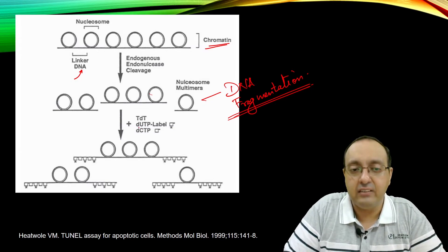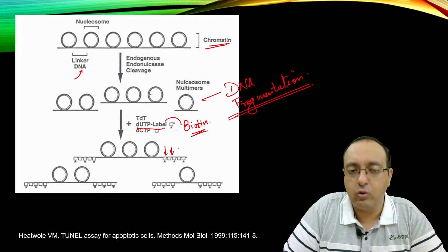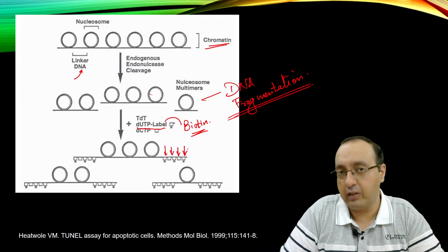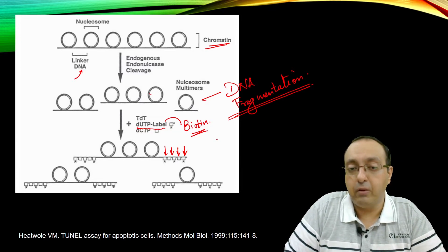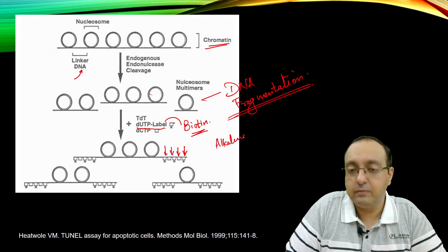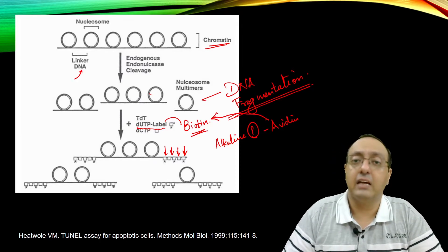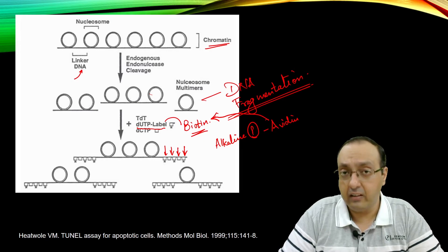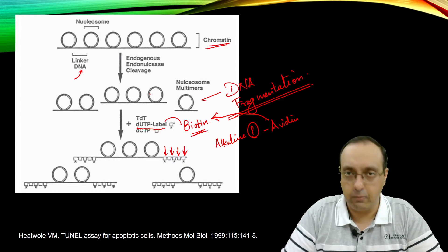If we add dUTP along with a label — usually biotinylated — these labeled nucleotides will add to the three-prime ends of the DNA. They can then be bound by enzymes such as alkaline phosphatase labeled with avidin. Avidin binds to biotin, and the alkaline phosphatase generates color. Similarly, fluorescent molecules can be labeled and directed to these dUTP molecules.